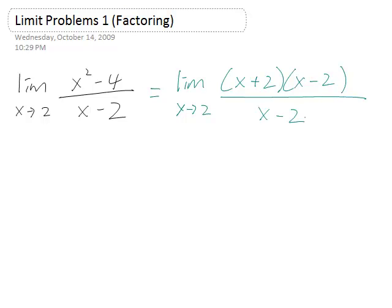Because the top is a difference of two squares, we can use the factoring formula for that, and we see that the x minus 2 is cancelled out. So this is really a limit as x approaches 2 of x plus 2.